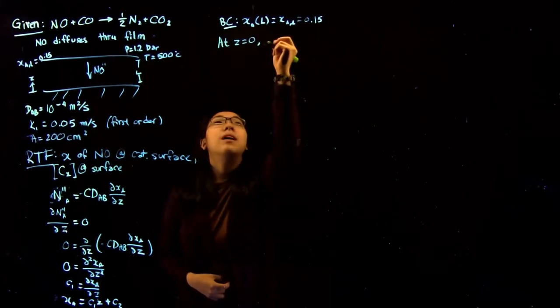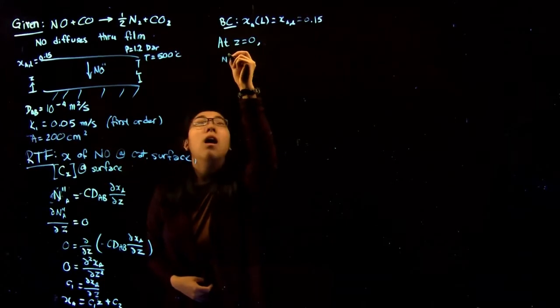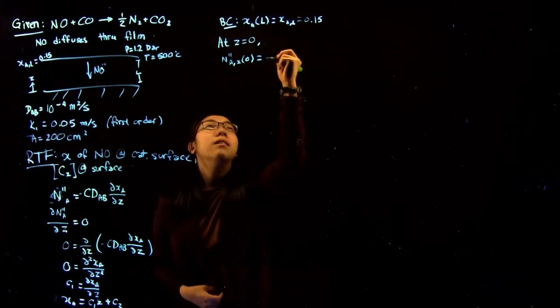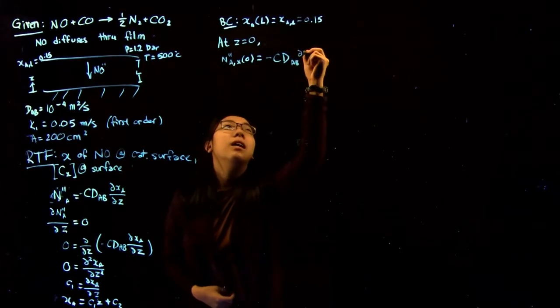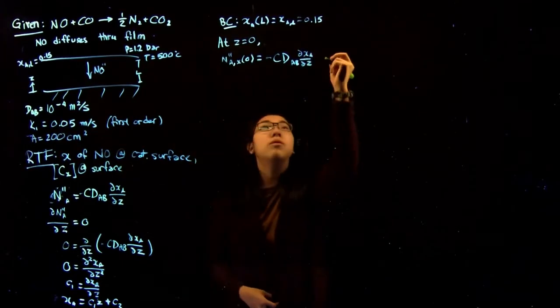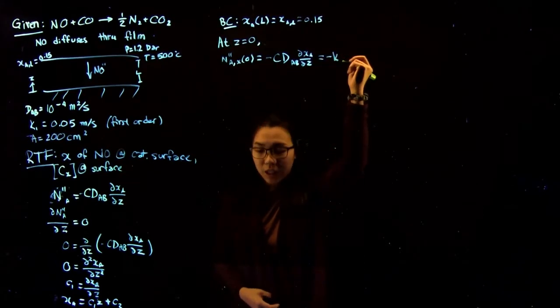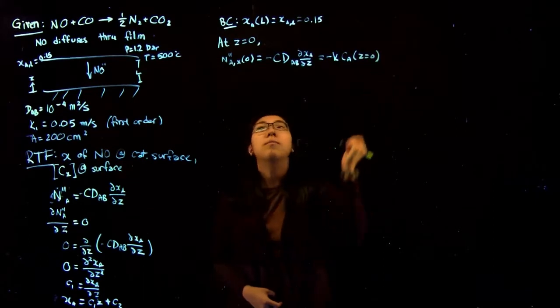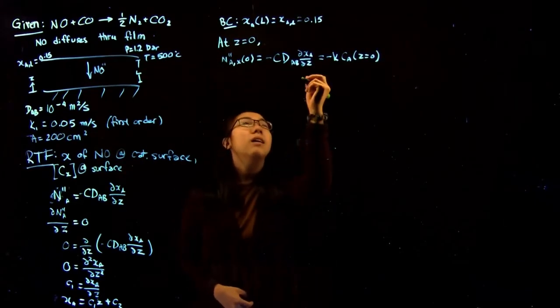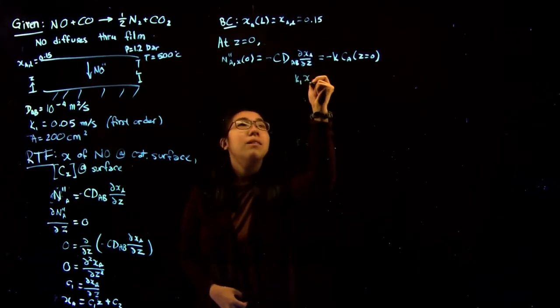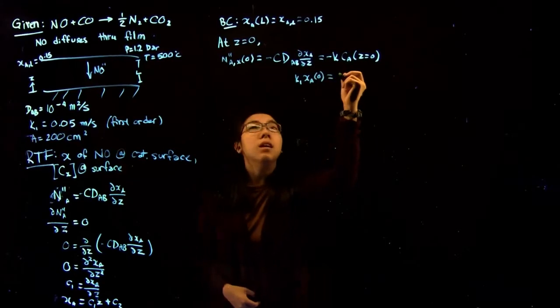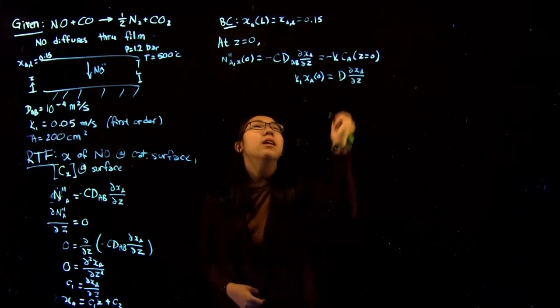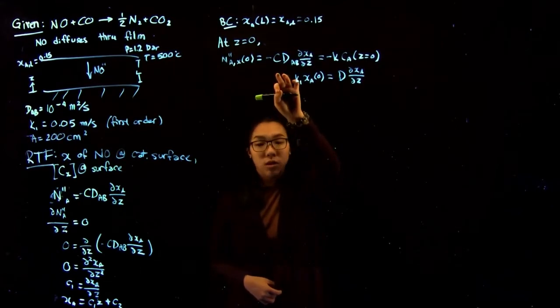But we also know that at Z equals zero, which is at the catalytic surface, we have that the flux is equal to minus the combined flux equation, CDAB dXA by dZ. But this is also going to be equal to the reaction rate because that's what's changing. So this is K times the concentration at Z equals zero. So simplifying this a little bit, we get that K1 times XA at zero is equal to D times dXA by dZ. Essentially, all we did was divide both sides by the negative sign and by the total concentration, C.